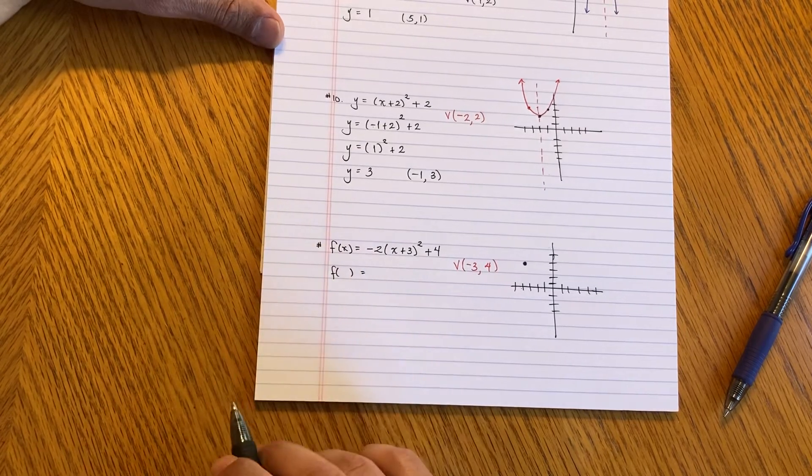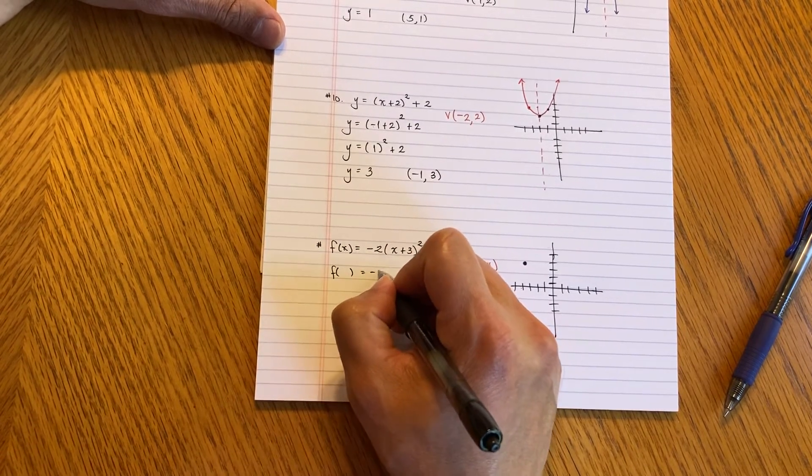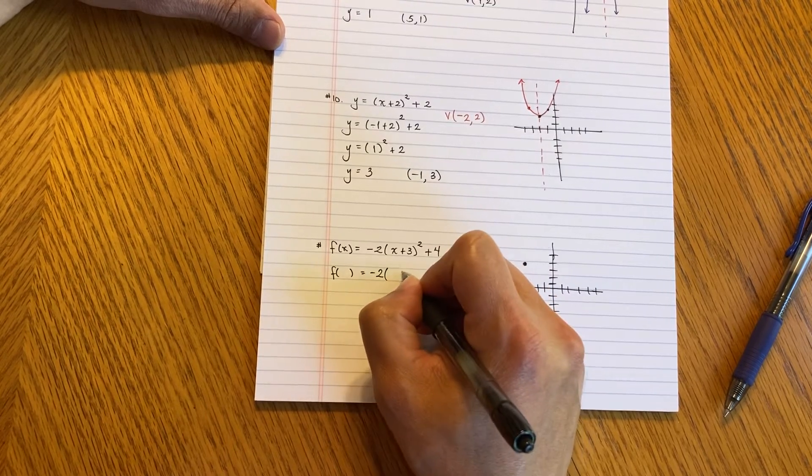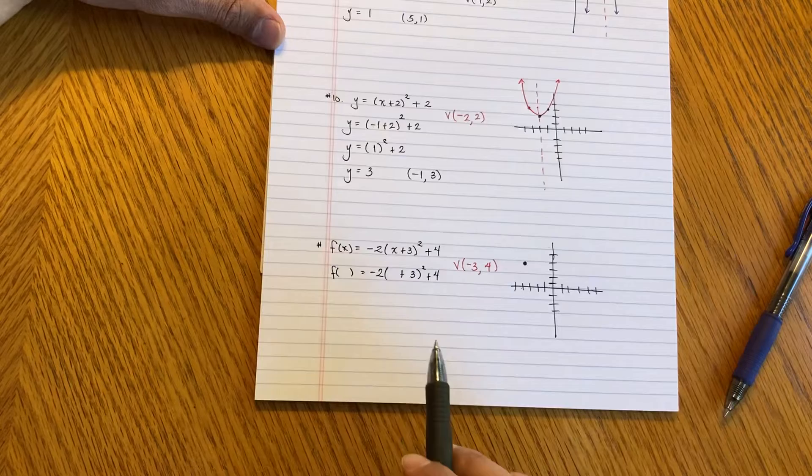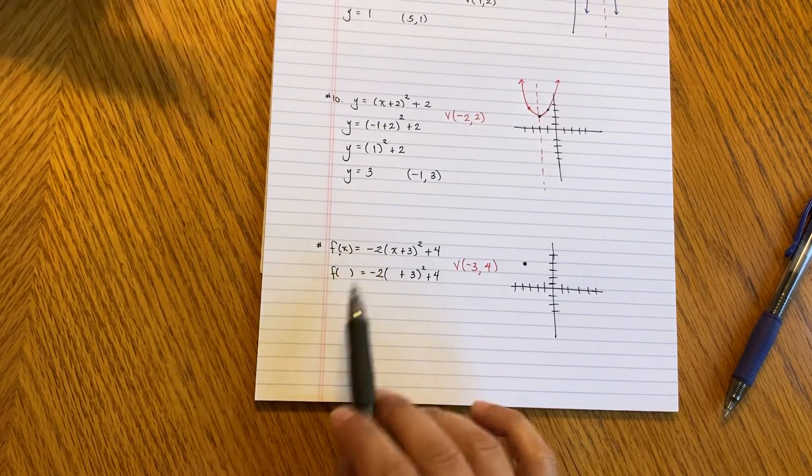So don't get confused about that. This is the notation we use in higher mathematics, but in algebra, in probably middle school, you probably use just Y equals. But at the higher we go, we use F of X. So what am I going to plug in for X? Think something easy.